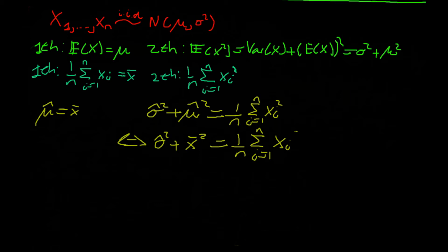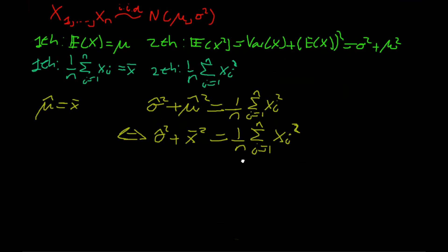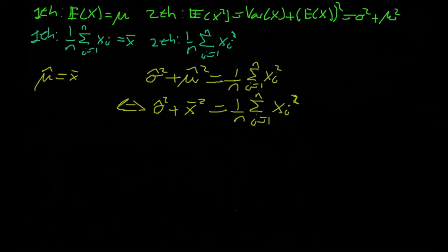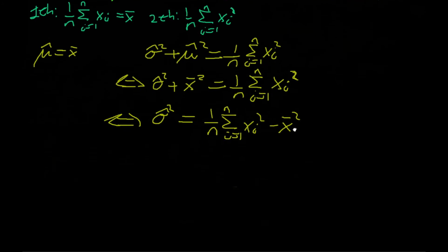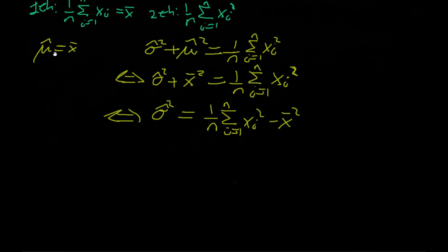Every time, we isolate the parameters we want to estimate, and that's what we'll do now. Solving for sigma-hat squared gives us 1 divided by n times the summation from i equals 1 to n of x_i squared, minus x-bar squared. So we now have the method of moments estimator for mu and the method of moments estimator for sigma squared.